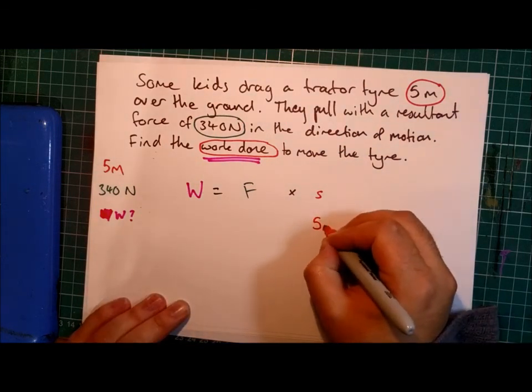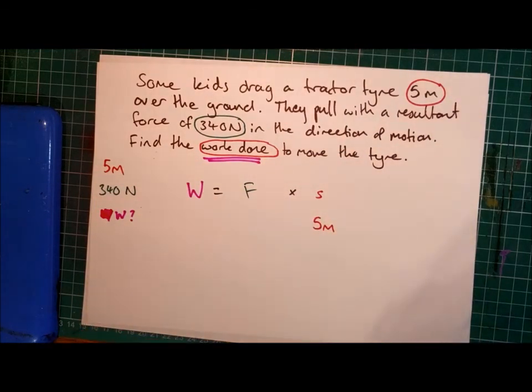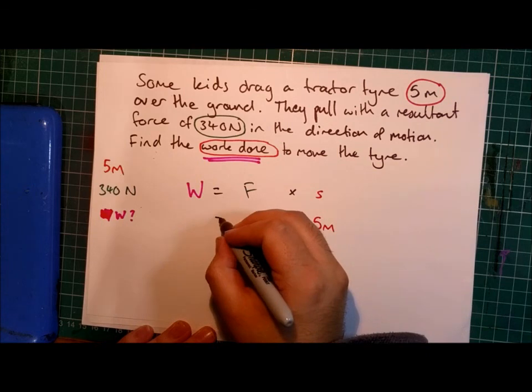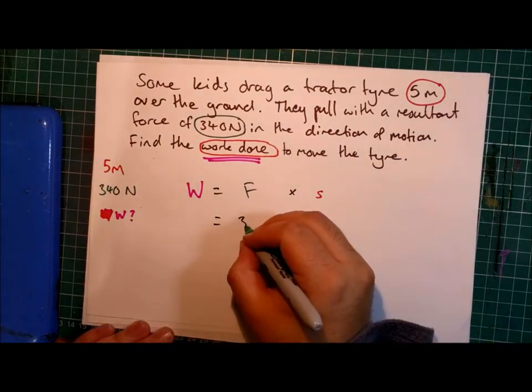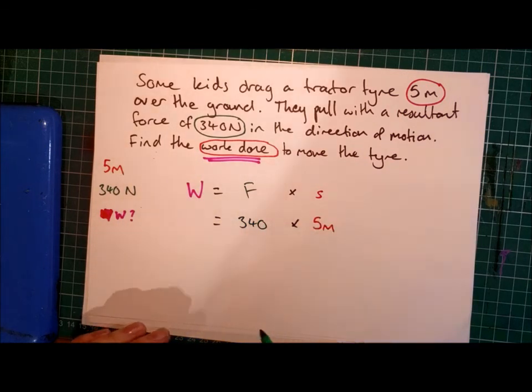Our distance was five metres, so there's our five metres. And our force was 340 newtons. Now because this is in metres and newtons, I don't need to change any of the units around to make them into metres or newtons, which makes this a lot easier.